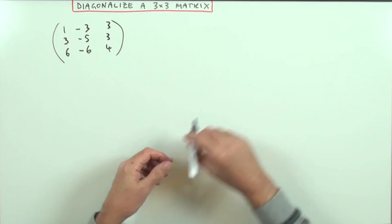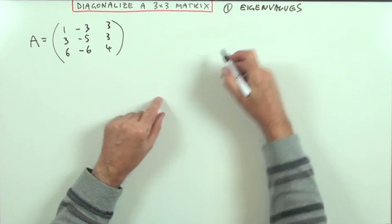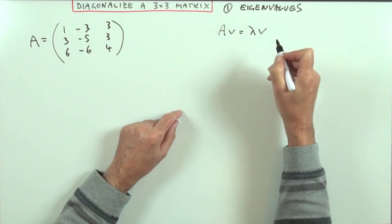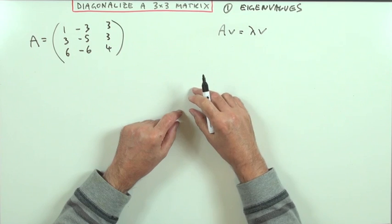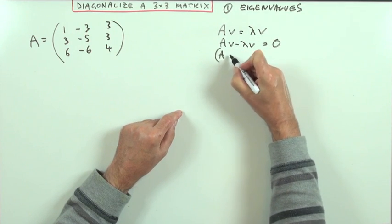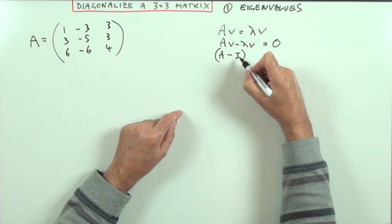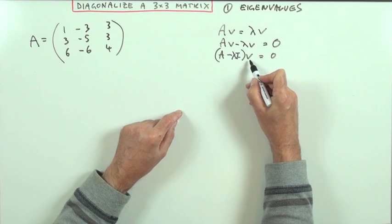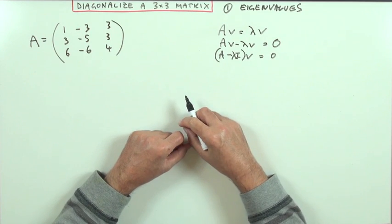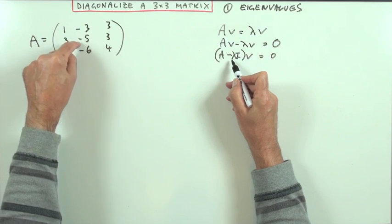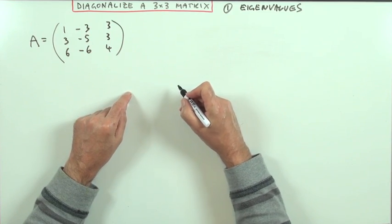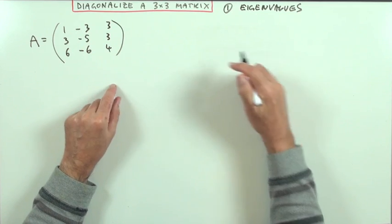Step one: get the eigenvalues. There are two ways you can do that. For matrix A, if A operates on some vector and produces a multiple of that vector, then that vector is an eigenvector and that multiple is the eigenvalue. Rearranging: A·V minus λ·V equals zero, so (A minus λI)·V equals zero. Since the vector can't be zero, the determinant of this matrix must be zero — subtracting λ down the main diagonal and equating the determinant to zero. Alternatively, there's the characteristic polynomial technique to find the eigenvalues.